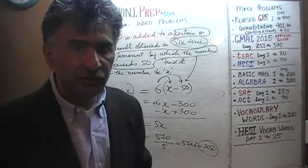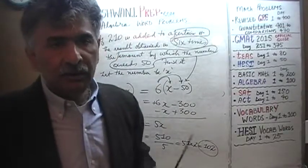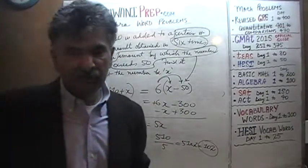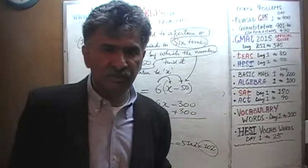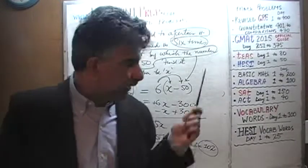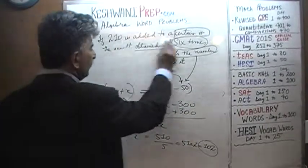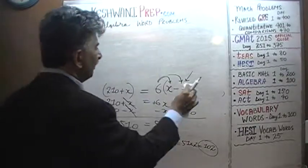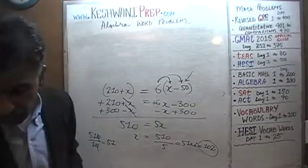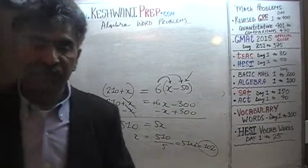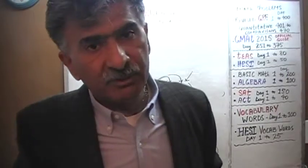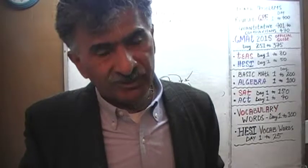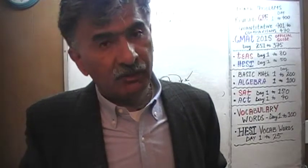What's the last thing we should do? We should verify our answer. We could have verified the last problem by substituting the value for the train, multiplying by 15 to get the air distance, then adding 40 — that should have given us 1000. I forgot to do that.